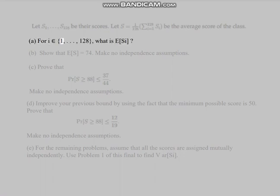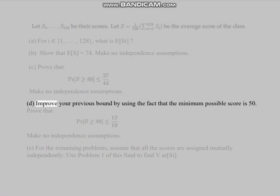Part (a): For i = 1 to 128, what is E(S_i)? Part (b): Show that E(S) equals 74. Make no independence assumptions. Part (c): Prove that Pr(S ≥ 100) ≤ some bound. Make no independence assumptions. Part (d): Improve your previous bound by using the fact that the minimum possible score is 50. Prove the improved bound. Make no independence assumptions.